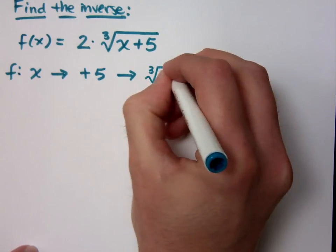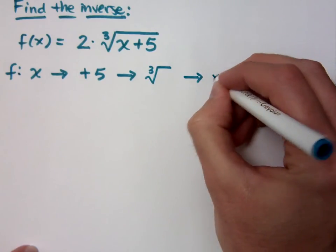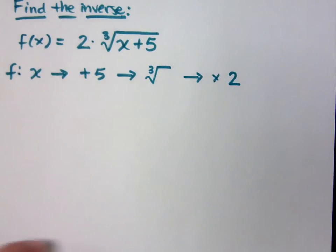I'm doing the cube root, and then I do what? Multiply it times 2. That is the order of operations for my original function.